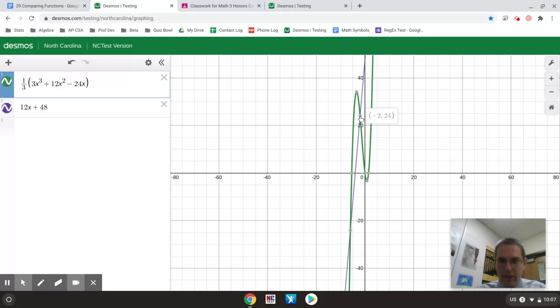And then you can see that I get an intersection here of negative 2. So x equals negative 2 is an intersection.